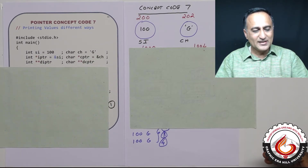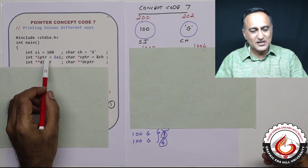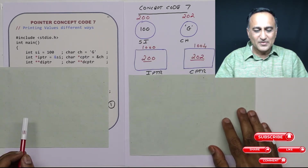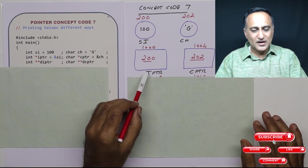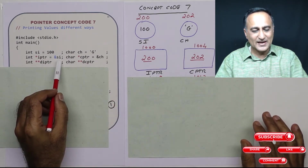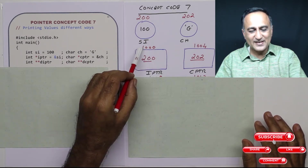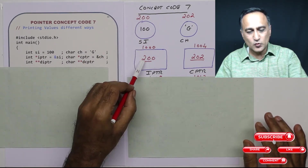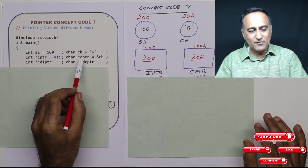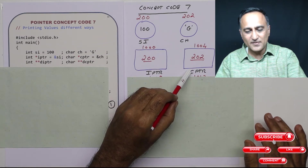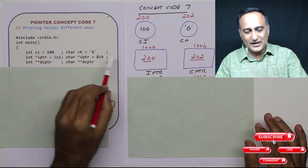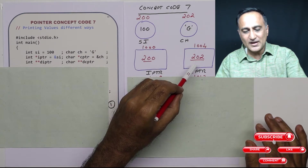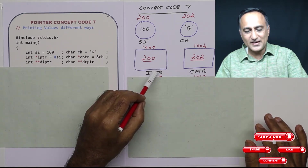Now let us look at the next two lines. The first line says star IPTR is equal to address of si, meaning IPTR is a single pointer and it contains the address of si. So IPTR existing at address 1000 is given the address of si, which is 200. Similarly, 202 is contained in CPTR and 200 is contained in IPTR.